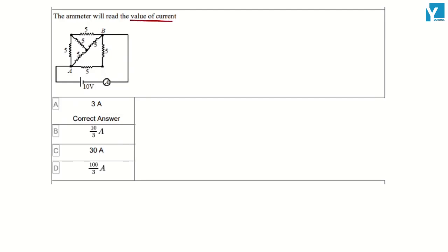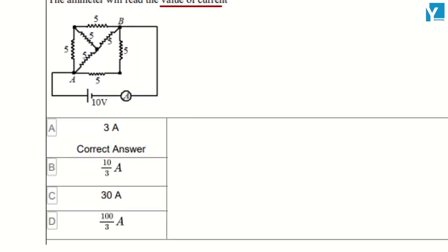The ammeter will read the value of current. We need to find resistance first.